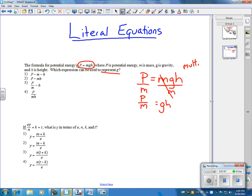Now M is connected by multiplication, so is H. So I'm going to divide both sides by H. And I'm going to put H here as well. And H is going to be divided. So my H's cancel. And then G equals P over MH. So that makes our answer number 4.